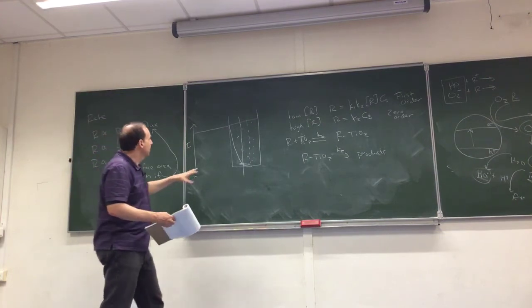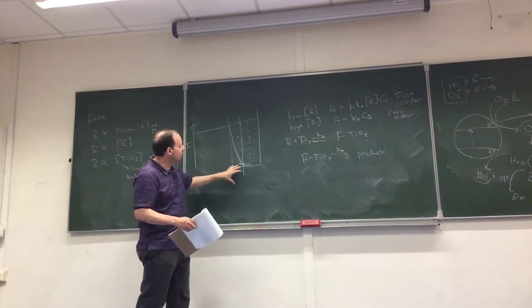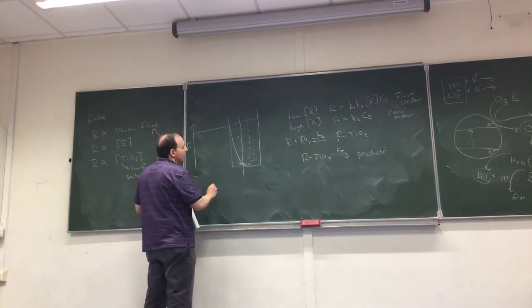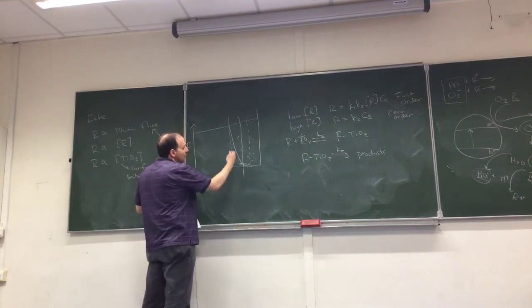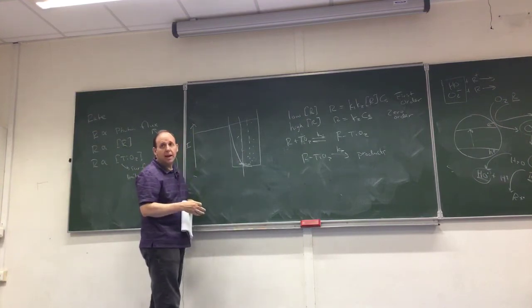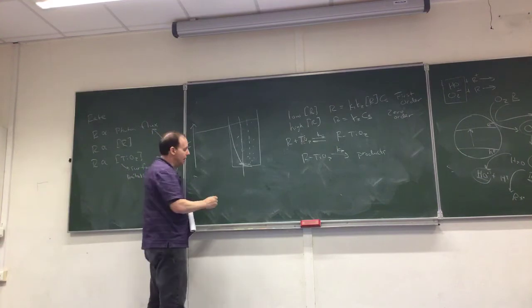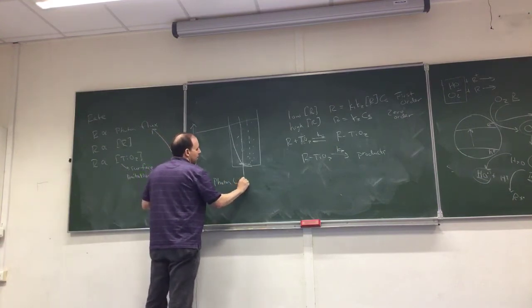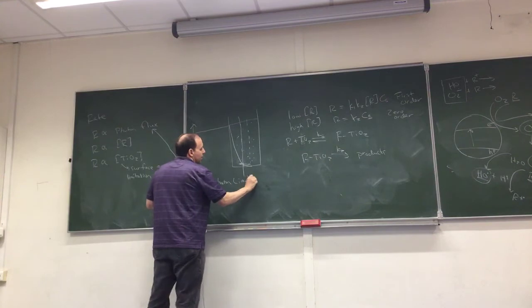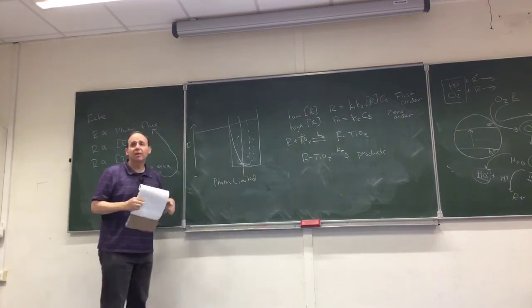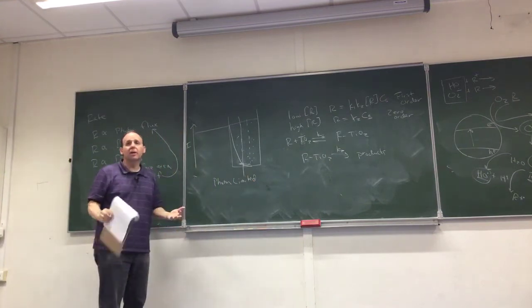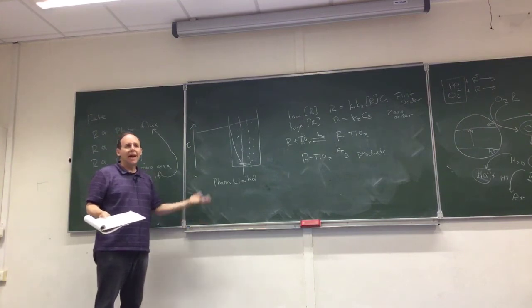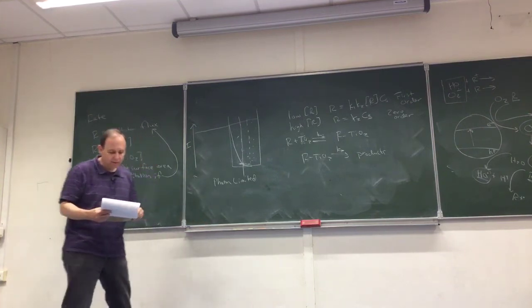If TiO2 concentration is so high that all photons are being absorbed, the reaction becomes photon-limited — it can't go any faster because all the photons are being used. That's an added complication in photocatalysis.